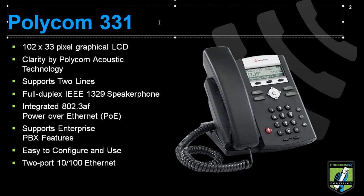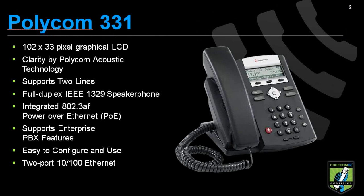The first model that we have here is the 331. This also translates to a 335 model, which is the high-def model. Both of these have a smaller LCD display. This is a very good phone for the casual user, someone that does not have to log into a phone or see much information on the screen. This phone supports up to two line activations and does have a switch port built in, in the event that there's only one drop to the desk and the phone and computer both need Internet.